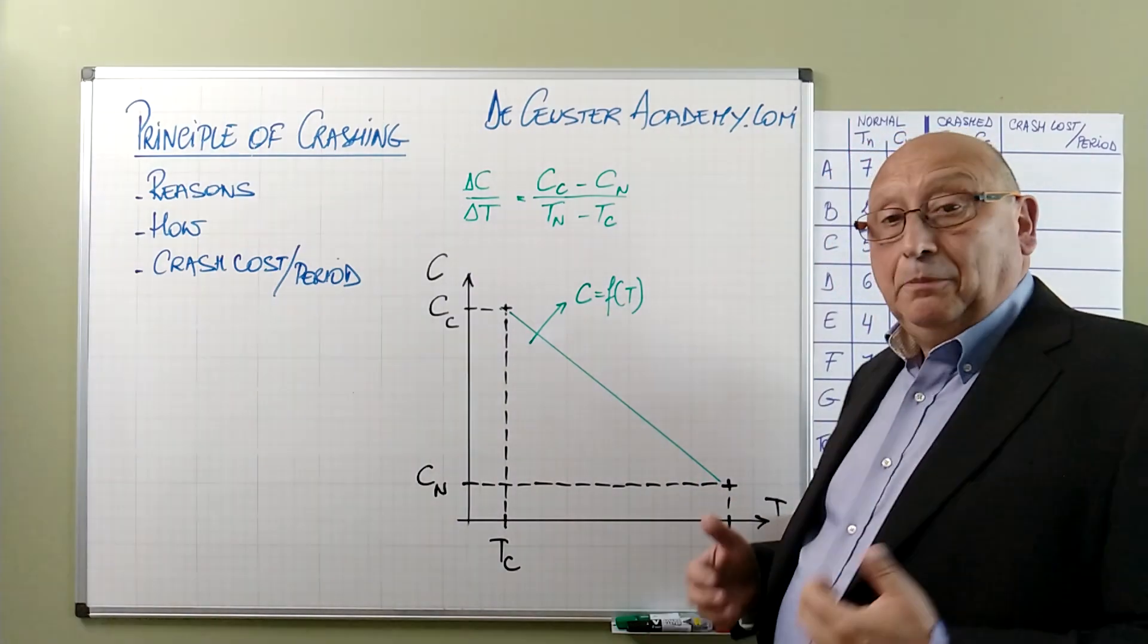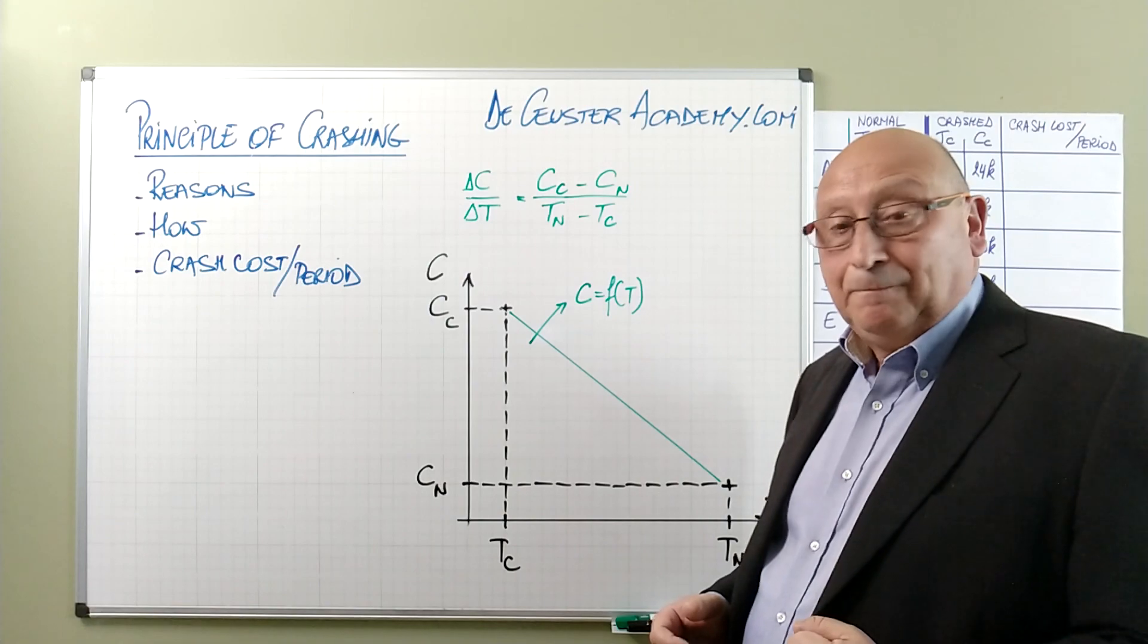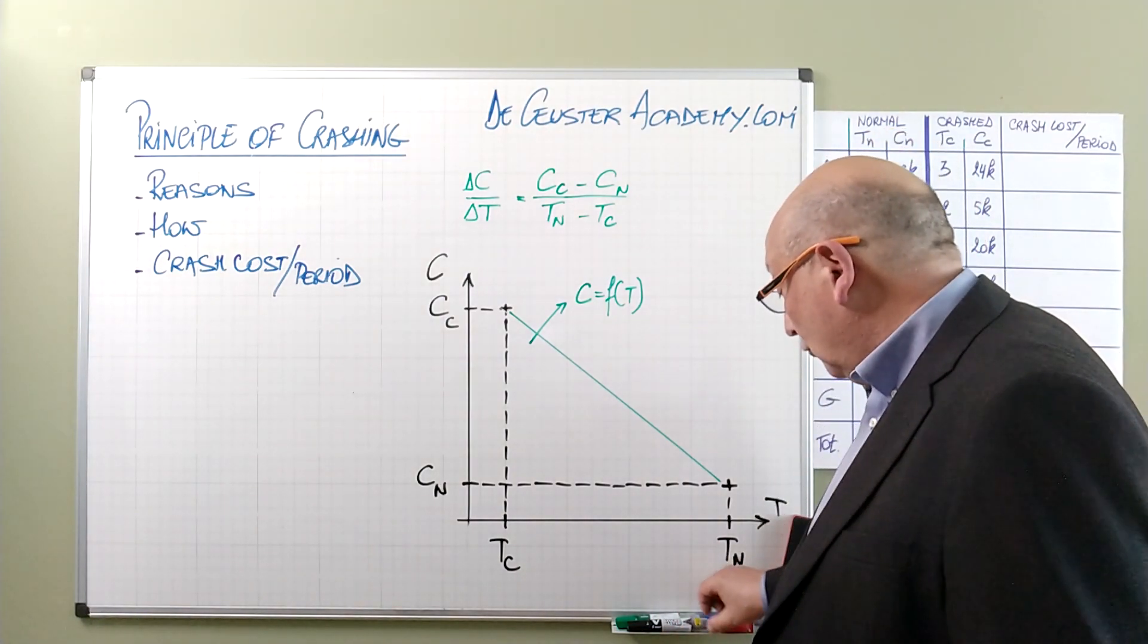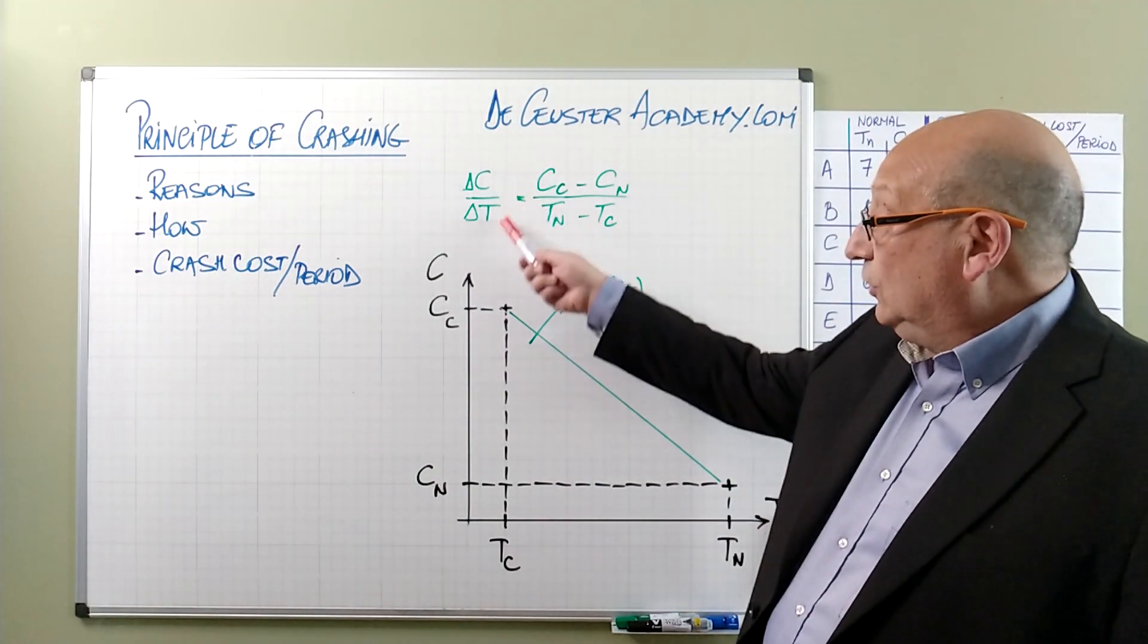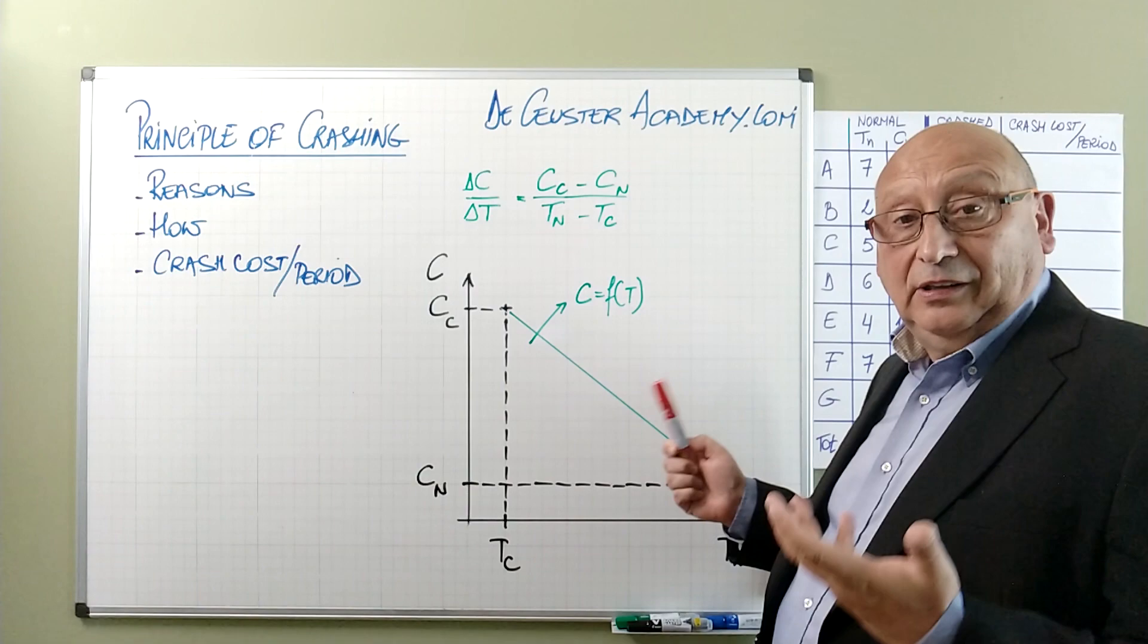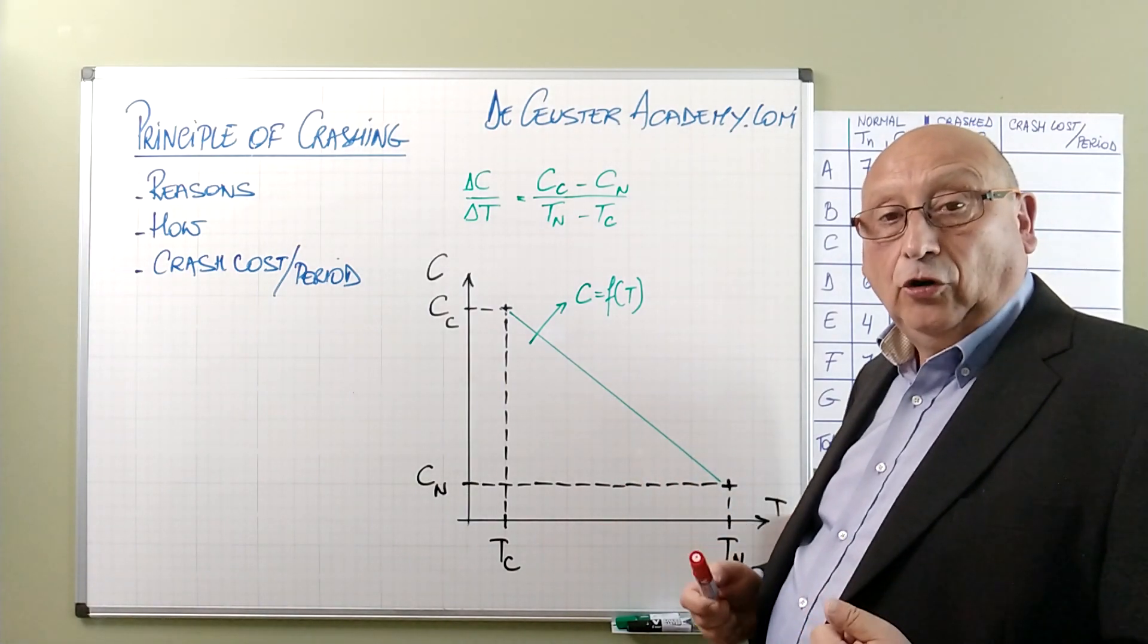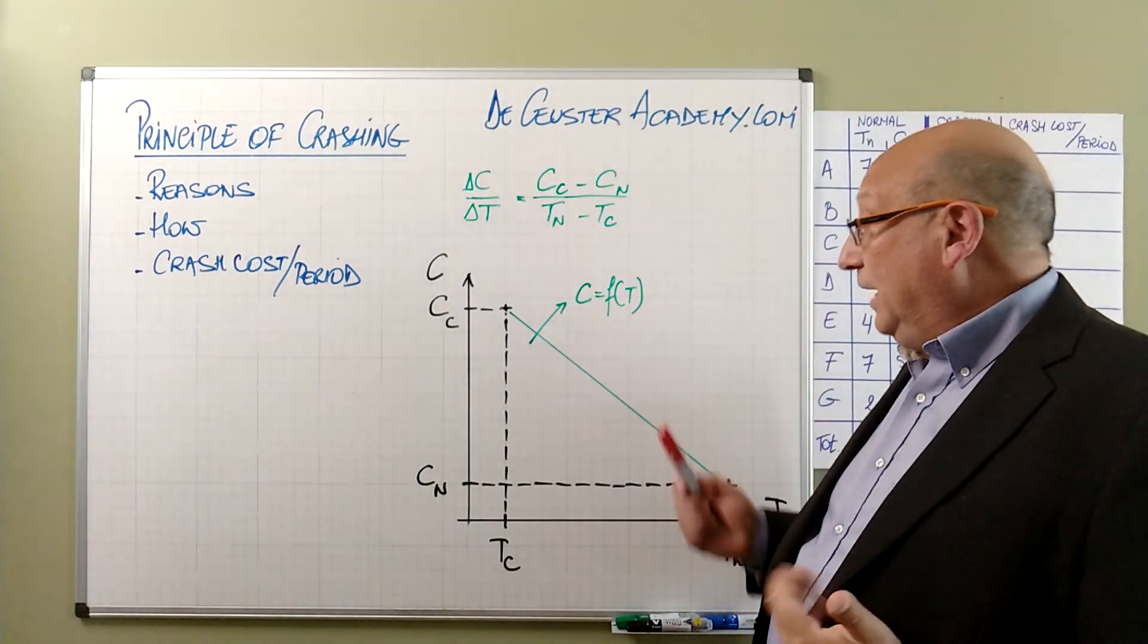The first thing to do is to say what is the crash cost per time unit: delta C over delta T. So we have the difference in costs, crash cost minus the normal cost, divided by the time. So this is the formula.